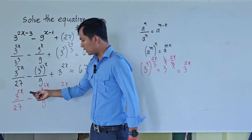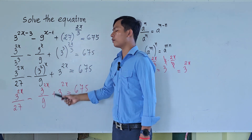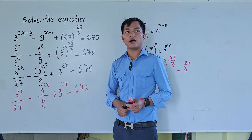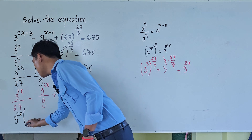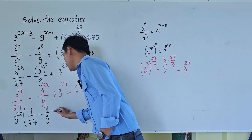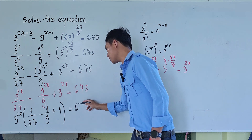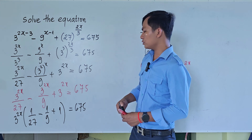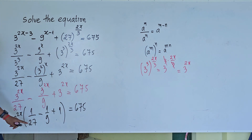Look at our equation — here is 3 to the power 2x, here is 3 to the power 2x, and here is 3 to the power 2x. So we take it out as a common factor. We get 3 to the power 2x, multiplied by the bracket: 1 divided by 27, minus 1 divided by 9, plus 1, equals 675.